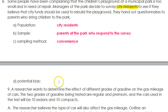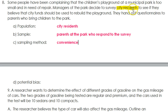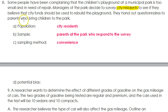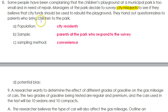The potential bias should be obvious. The population is all city residents, but here we're only handing out questionnaires to parents who bring their children to the park. There are a lot of city residents who aren't parents at all, who might have thoughts about having their tax dollars spent on children. And even parents who never take their kids to the park might have thoughts about spending tax dollars on a park they don't use. So the potential bias is only talking to parents who bring their children to the park, excluding people who aren't parents and those who don't bring their kids to the park.